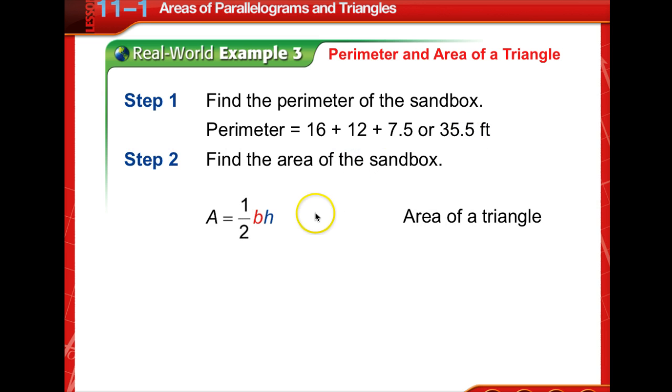To find the area of the sandbox, we know that the area of a triangle is one half its base times height. The base is 12, the height is 9, so we get 54 feet squared.